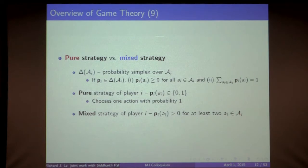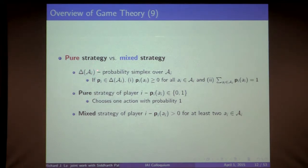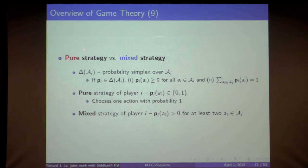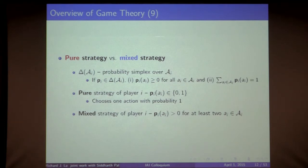A strategy for an agent is a probability distribution over the set of available actions. Script A_i is the set of available actions for player i, and a strategy is an element in the probability simplex delta over A_i. A strategy is called a pure strategy if the distribution assigns probability 0 or 1 to every action — the agent chooses one action with probability 1. If the distribution assigns positive probability to more than one action, it's called a mixed strategy.